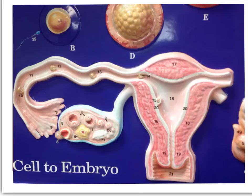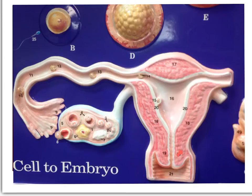Additionally, the rounded part of the uterus is called the fundus. The muscle layer of the uterus is called the myometrium. We can also see the neck or cervix of the uterus, and the vagina. Review these sections and make sure you are familiar with all of these components on this cell-to-embryo model.